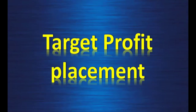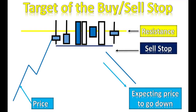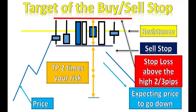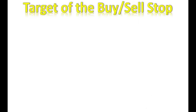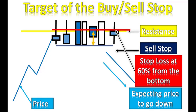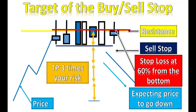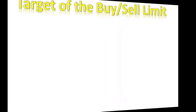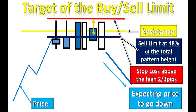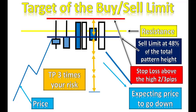Now let's see the target profit placement. For the buy and sell stop: your stop loss is above the high, the orange two-sided arrow represents the risk, and you take 2 times your risk as target profit. Why 2 times only? Because your risk is quite large — sometimes the candlesticks are very big, so 2 times the risk is already a lot of pips. When you use the 60% stop loss, your risk is only 60% of the other, so in that case you take 3 times for your target profit reward. For the buy and sell limit, your target profit is 3 times your risk since your risk is quite small.